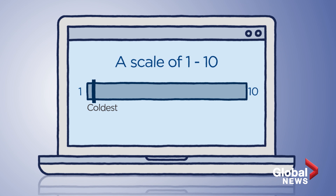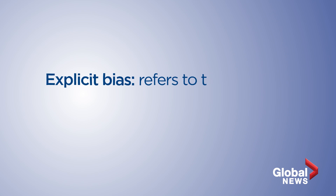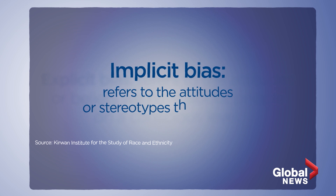But what if the test asked you to rate your feelings toward a certain race? Seems really forward, right? That's because this is a test for explicit bias, which refers to the attitudes or beliefs we have about people on a conscious level. But every person has something called an implicit bias, which refers to the attitudes or stereotypes that affect us unconsciously — meaning we likely don't know or believe we have these.